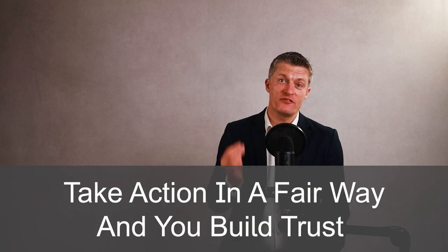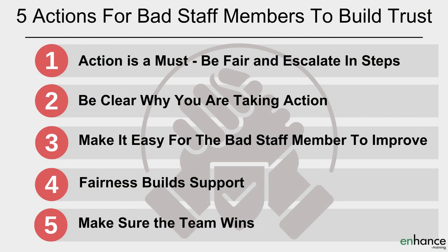In summary, when you have a bad staff member at work, you must take action to help that person improve. Taking action will require a significant investment of time and effort, but not taking action is a lot, lot worse. Make sure your action is fair, reasonable, and focused on ensuring the team is better off overall. As a reminder, the five actions are: first, action is a must — be fair and escalate in steps; second, be clear why you are taking action; third, make it easy for the bad staff member to improve; fourth, fairness builds trust; and fifth, make sure the team wins. Take a look at the resources and videos in the description below for more help, and please leave any questions in the comments.